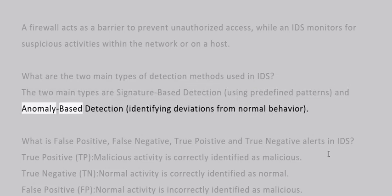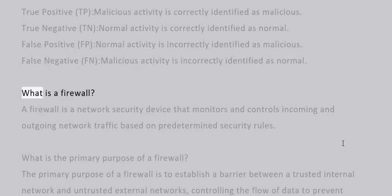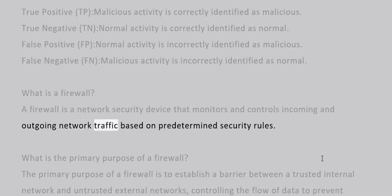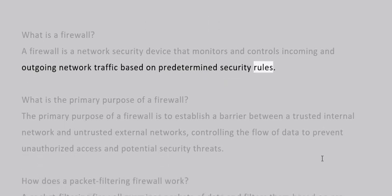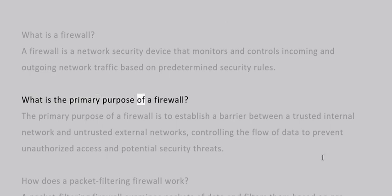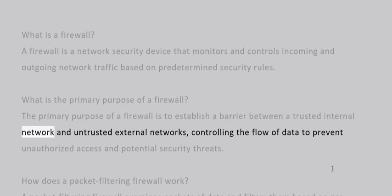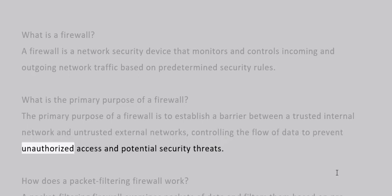What is a firewall? A firewall is a network security device that monitors and controls incoming and outgoing network traffic based on predetermined security rules. What is the primary purpose of a firewall? The primary purpose is to establish a barrier between a trusted internal network and untrusted external networks, controlling the flow of data to prevent unauthorized access and potential security threats.